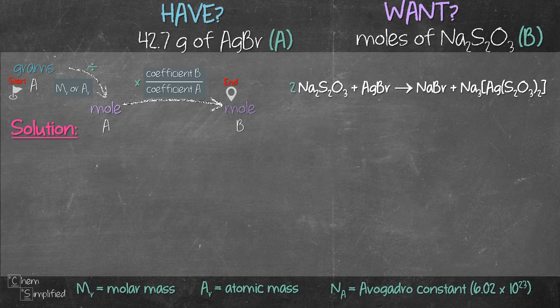In step one, we'll go from grams A to moles A and in step two, we'll go from mole A to mole B. A in this case like I mentioned before is AgBr and B is Na2S2O3.